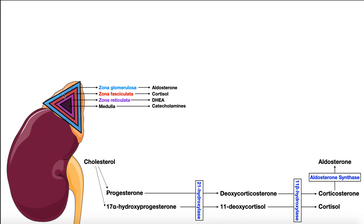The adrenal gland has two major components. There's the adrenal medulla, which is in the dead center, and then this is surrounded by the adrenal cortex. The adrenal medulla is responsible for the synthesis of catecholamines, and it's under the control of the sympathetic nerve.